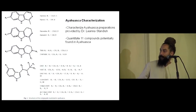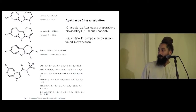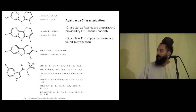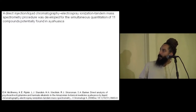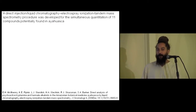We also looked at a number of different methylated tryptamines: DMT, its metabolite or precursor NMT, and also something that hasn't been researched much, which is a big finding in our paper — DMT N-oxide. It's a major metabolite of DMT, and we wanted to see if it was actually in ayahuasca itself, as well as 5-MeO-DMT and 5-hydroxy-DMT, or bufotenine. And we developed this direct-inject chromatography electrospray ionization mass spectrometry procedure to simultaneously quantify all of these.